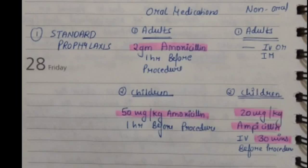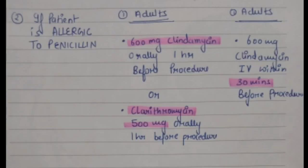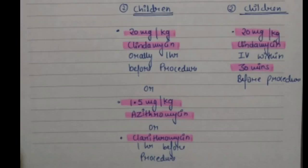When the patient is allergic to penicillin, there are different procedures for prophylaxis. In adults, we give 600 mg clindamycin orally one hour before the procedure, or clarithromycin 500 mg orally one hour before the procedure. For the intravenous route, we give 600 mg clindamycin within 30 minutes before the procedure. Please note: intravenous route is 30 minutes before the procedure.